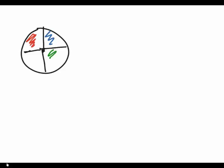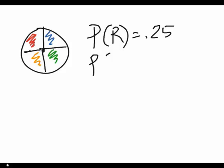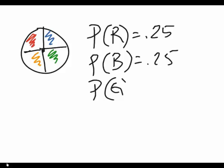For example, if you have a spinner that is cut into four different colors, and you have red, blue, green, and orange, the probability of you getting red is 0.25 or 25%. The probability of you getting blue is the same. The probability of you getting green and orange is exactly the same.